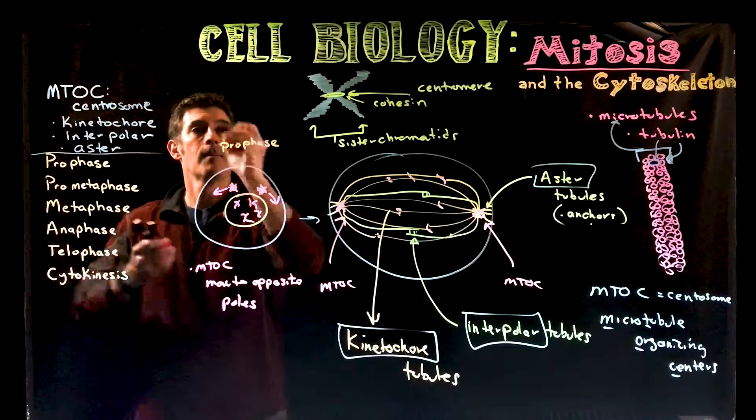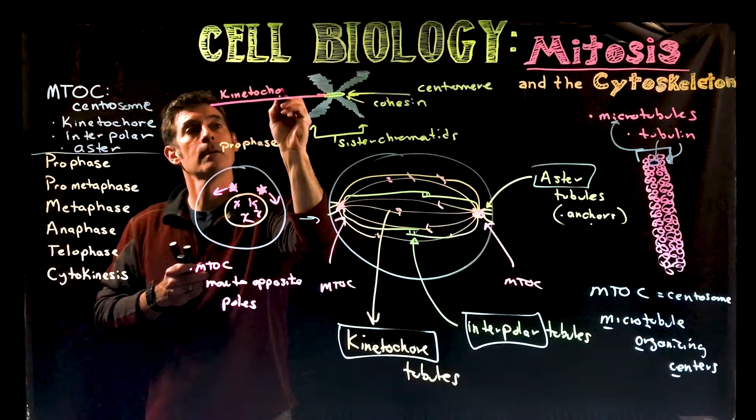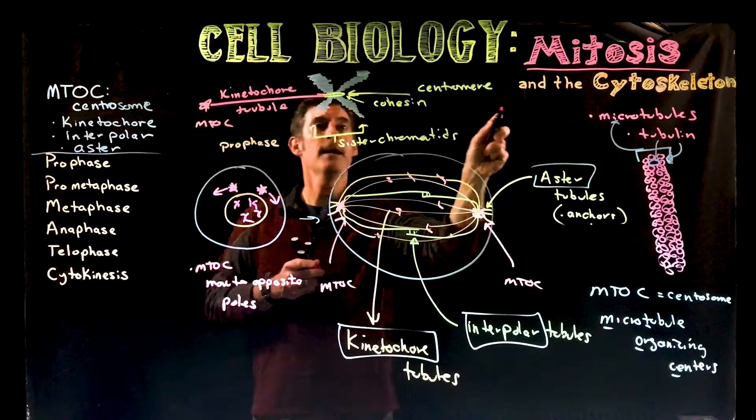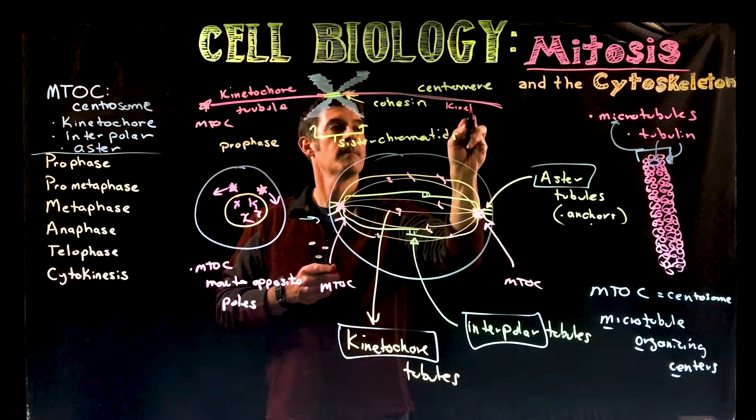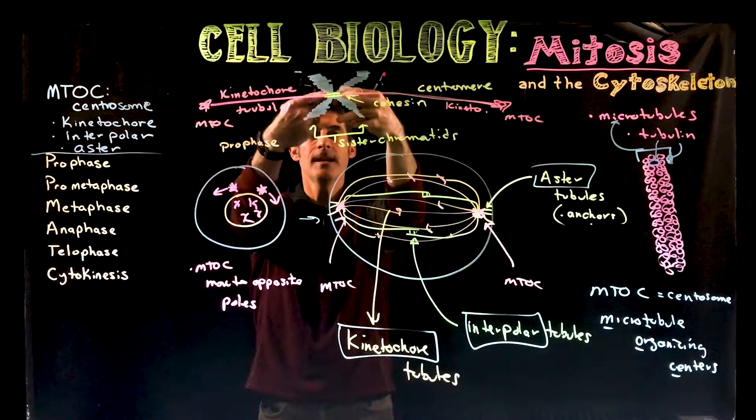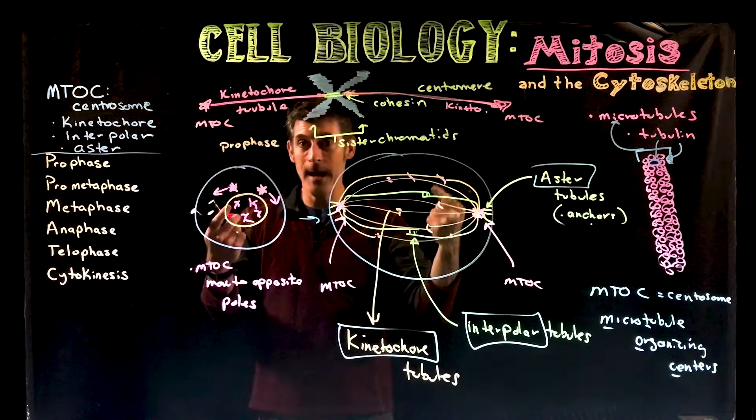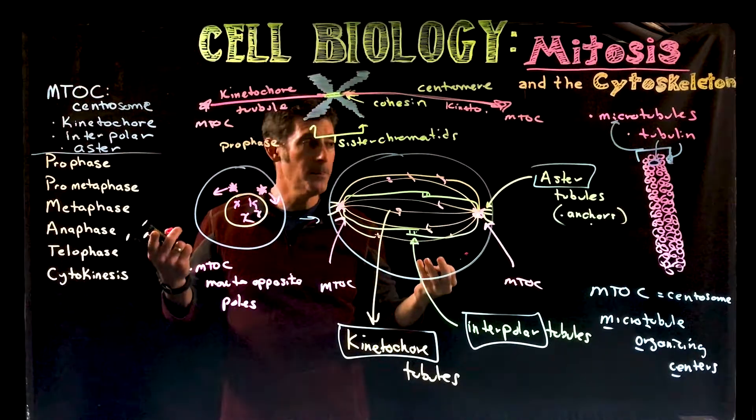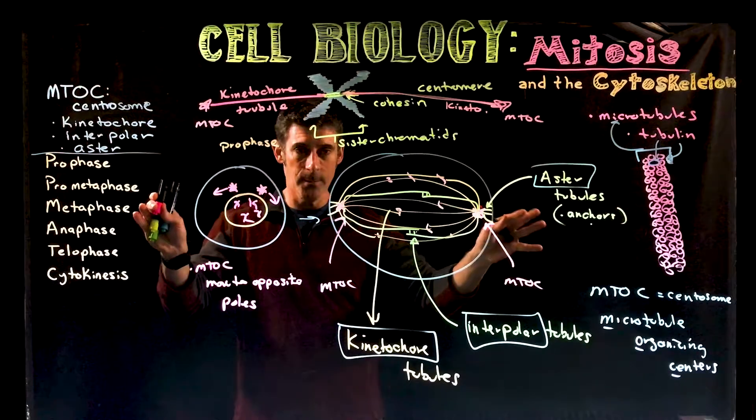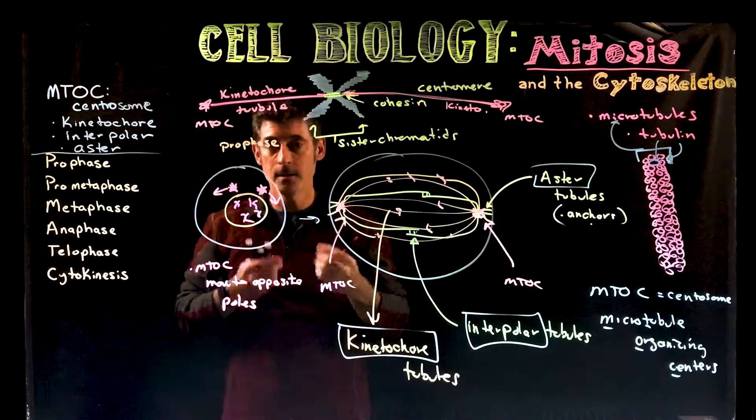And now we get the interpolar tubules, sorry, not interpolar, kinetochore tubules, right? Kinetochore tubule coming from one MTOC. And then we're going to get another kinetochore tubule coming from another MTOC. So the kinetochore tubules come from the MTOCs. They connect to the sister chromatids at this particular region, at their centromere, at the area where the cohesin is, and they're trying to pull the sister chromatids apart. So two forces are working at the same time. You have the force of the interpolar tubules pushing on each other, which is stretching the cell apart. And then you have the force of the kinetochore tubules, which are trying to pull the sister chromatids apart, but they can't get pulled apart because cohesin is holding them together.